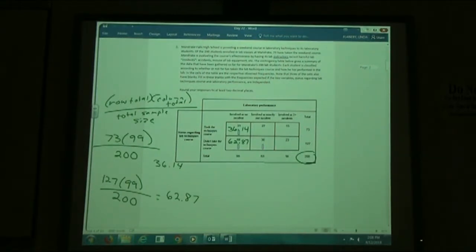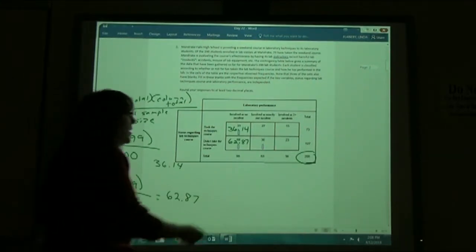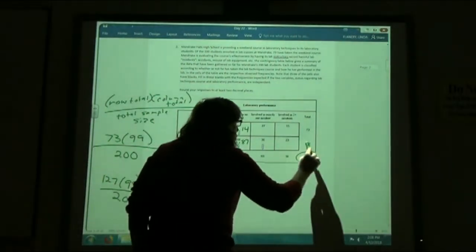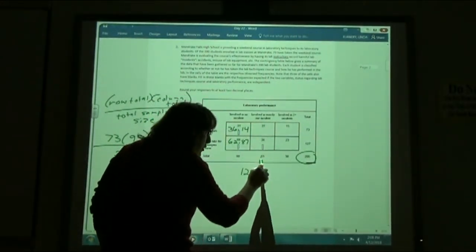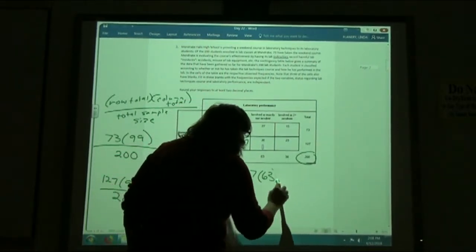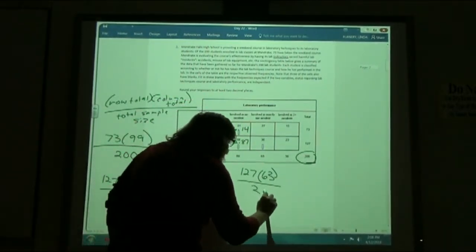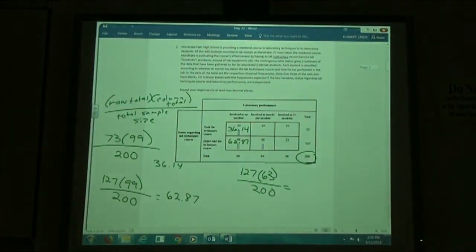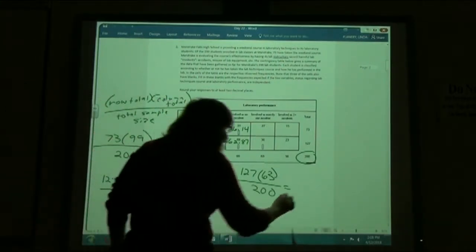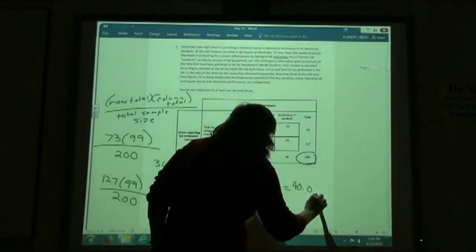And the third box there we want to fill in. This one here, we're going to take our row total, which is 127, times the column total, which is 63. And again, divide by the sample size of 200. And so we should get 40.01.